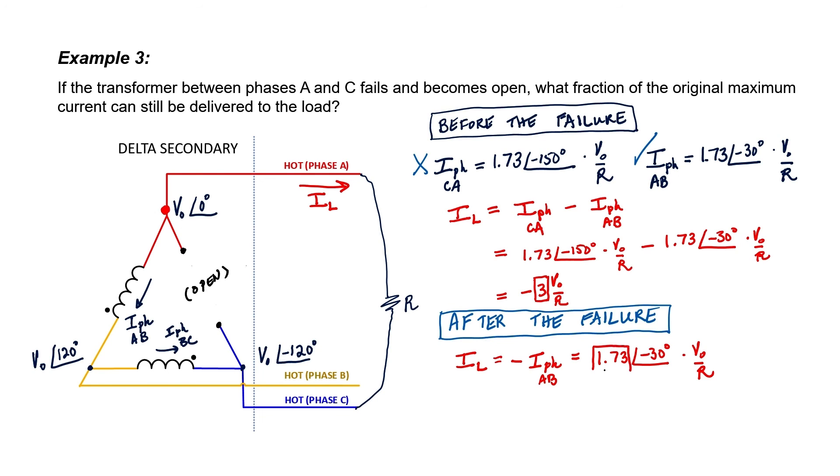The magnitude of the line current before the failure was 3 Vout over R, and the magnitude of the line current after the failure was 1.73 Vout over R. Less current is flowing after the failure, which means that the maximum power that you can draw at your load is going to be reduced accordingly.